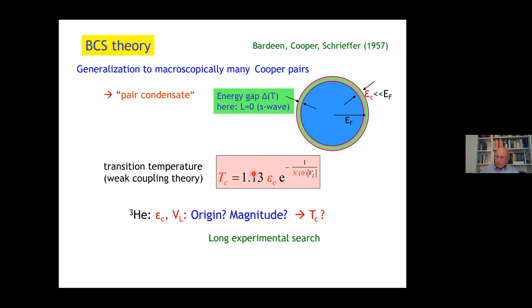Experimentalists searched, improved cooling. T_C was predicted, experimentalists went back to their lab, found nothing. T_C was re-normalized, experimentalists went back again, found nothing, and they just gave up. Nobody searched for superfluid helium-3 anymore.